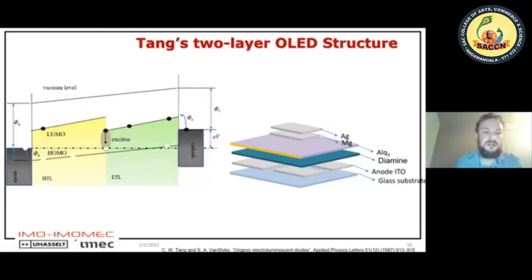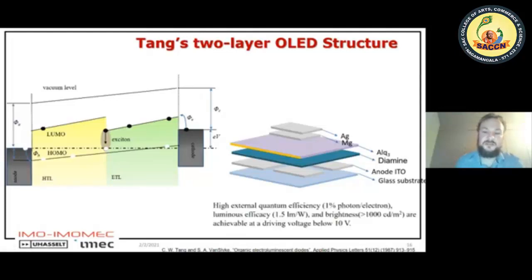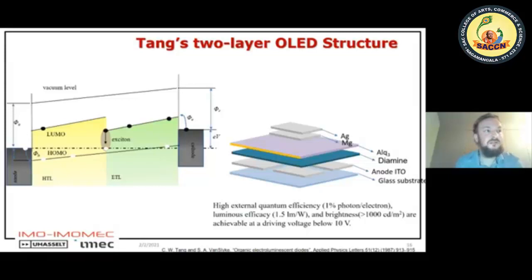When the hole and electron meet, they form an exciton, and when the exciton relaxes it generates light. This led to quite high external quantum efficiencies — about 1% of photons emitted per electron input — with a luminous efficacy of 1.5 lumen per watt, brightness around 1000 candela per square meter, and a driving voltage of 10 volts. These are important numbers to keep in mind.